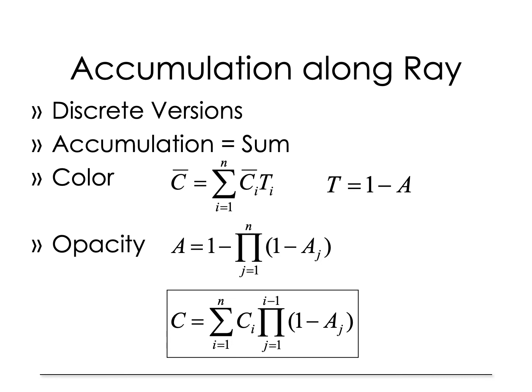The opacity at a particular point i, A sub i, depends on how much color is allowed to be transmitted through all the points j equals 1 to n. The opacity A sub i can be written as 1 minus the product of all these transmittivities for all points j equal to 1 to n. This expression can be plugged in to the expression for C bar to give us the color at a particular point. Summing this up over all sample points on the ray, we get the color at the pixel corresponding to that ray.